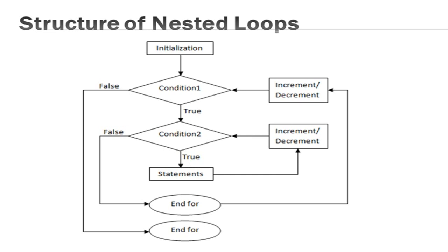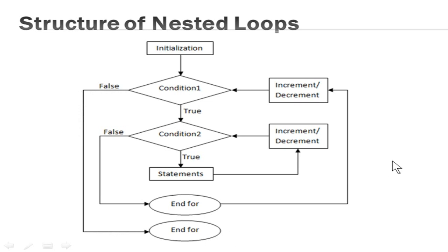Once the inner loop condition is satisfied, it comes out and goes back to the updation statement of the outer loop, where it increases or decreases the control variable and then checks the condition of the outer loop. If the condition is true, it enters the inner loop again. This process will go on till the outer loop condition becomes false, at which point it comes out of the loops. This is how the nested loop works.